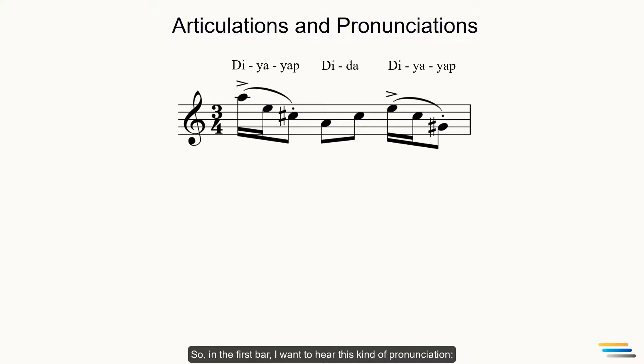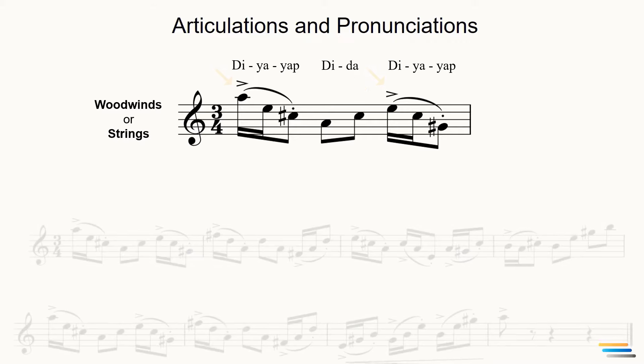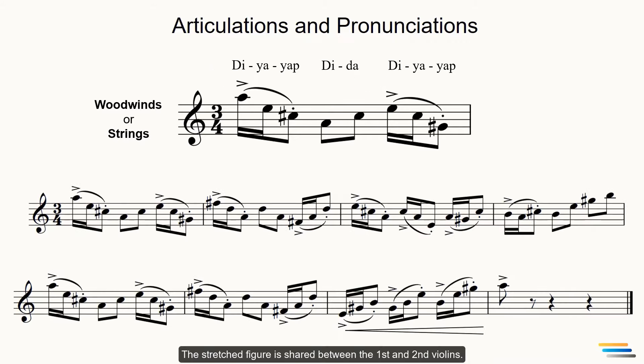So, in the first part, I want to hear this kind of pronunciation. Tee-yap-dit-da-tee-yap. This figure is well suited for both woodwind and string sections. The normal accents have been used to accentuate the first and third beats. The stretch figure is shared between the first and the second violins.